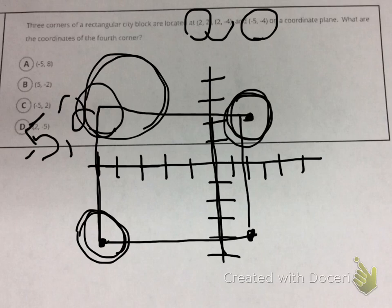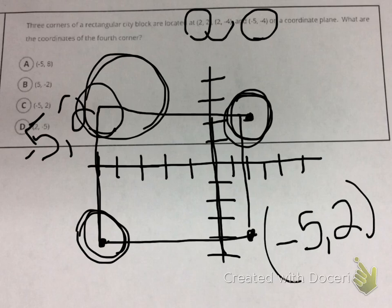So I know that my coordinate for my fourth corner should be negative 5, 2. And that matches letter C. So that is my answer.